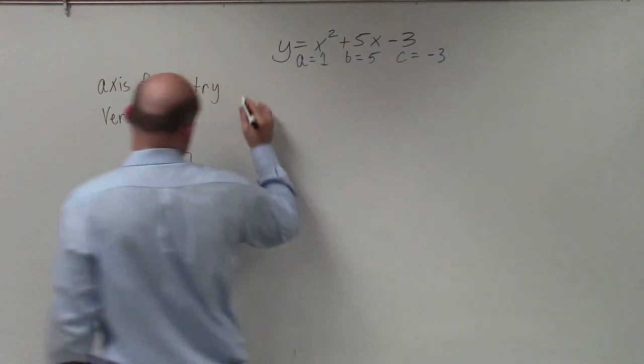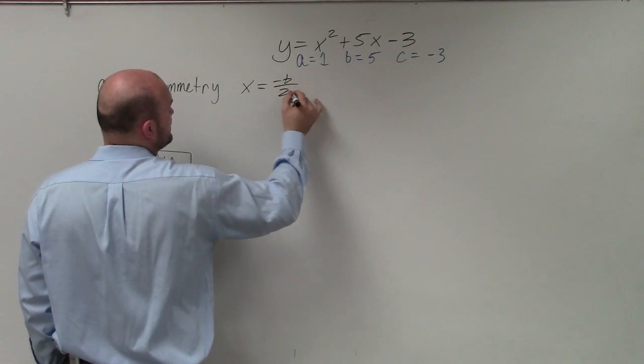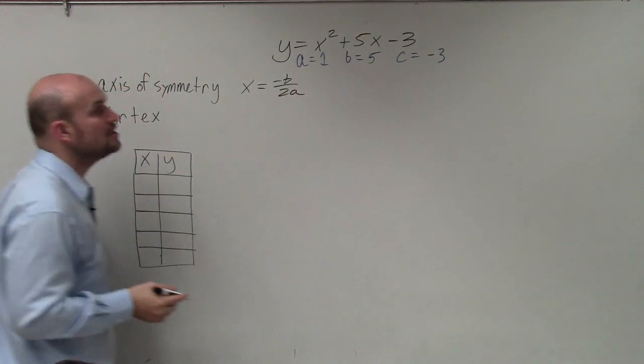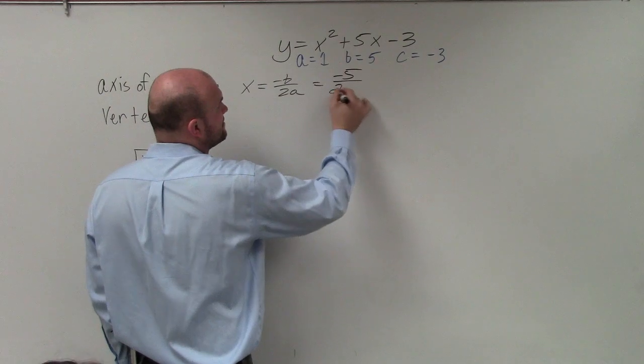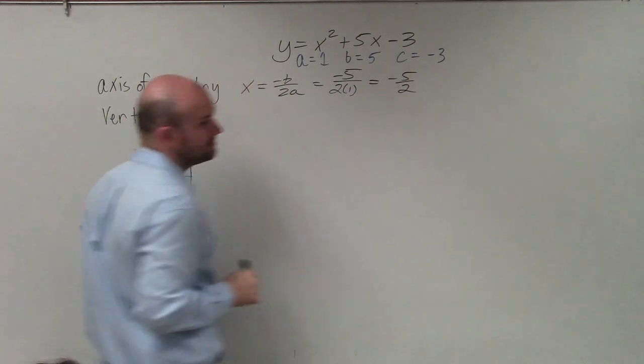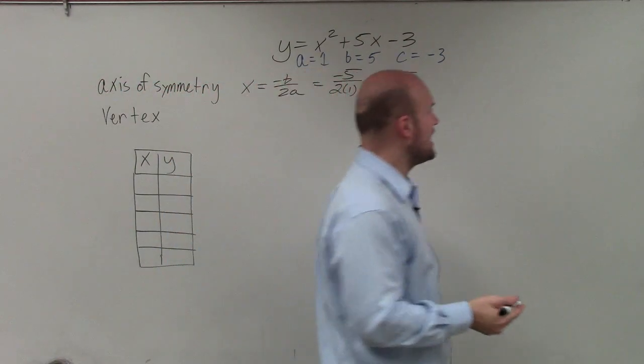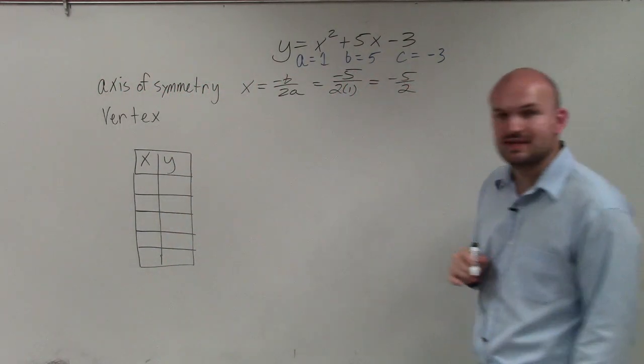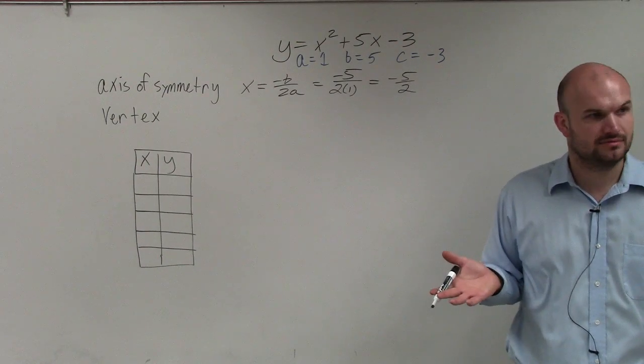The next thing is to identify the axis of symmetry. In your notes, I gave you x equals opposite of b divided by 2 times a. So we simply just plug in opposite of b, which would be negative 5, divided by 2 times 1, which is negative 5 halves. So that's going to be your axis of symmetry. If you convert that to a decimal, that's going to be negative 2.5.